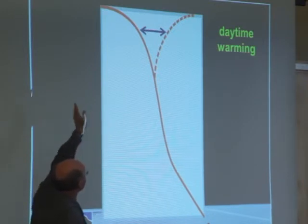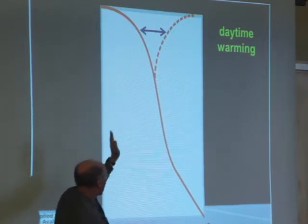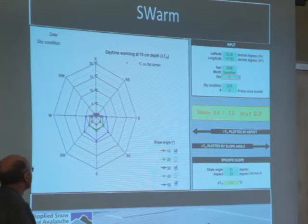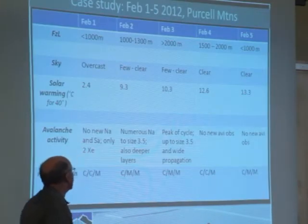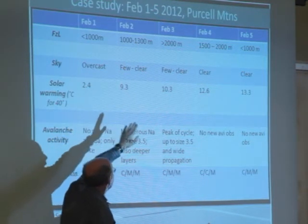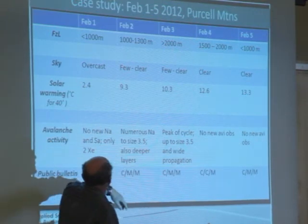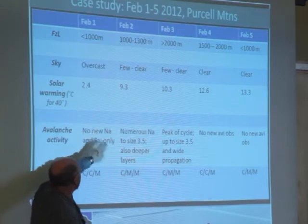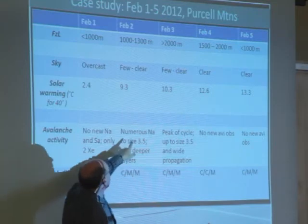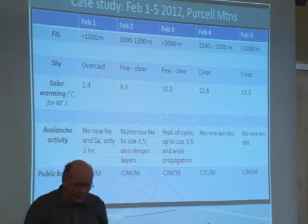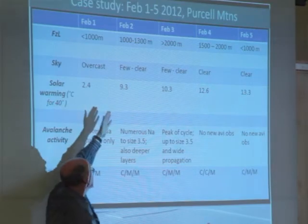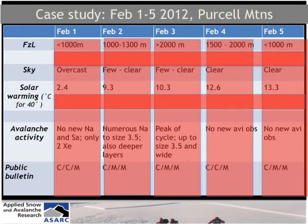Here's what SWARM is doing. The solid line is the overnight cooling, and SWARM down 10 centimeters gives you the maximum change. February 1st is overcast, and then the snow finishes and the sun comes out. There's nothing happening the last day of the storm — no new naturals, no skier accidentals. Then: bang. Numerous natural avalanches to size 3.5, also deeper layers ripping out. Here's SWARM jumping from 2.4 to 9.3 when the sun comes out — this is steep south. Steep south during the overcast day, and then February 2nd steep south after the sun comes out.